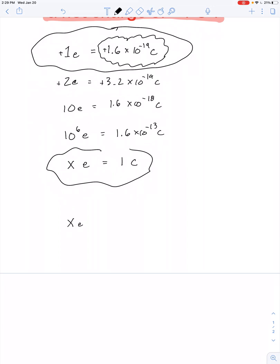x electrons is to 1 coulomb as 1 electron is to 1.6 times 10 to the negative 19th coulombs.